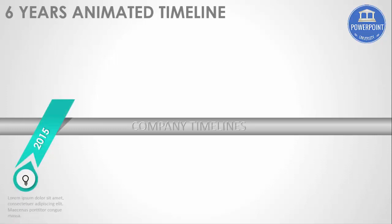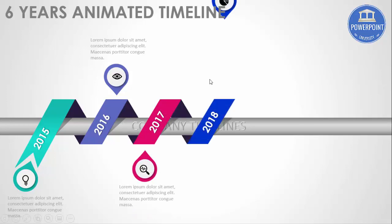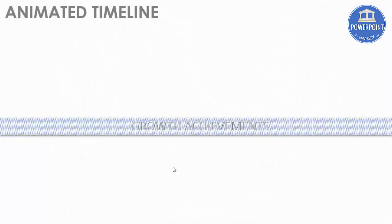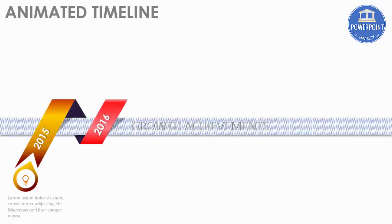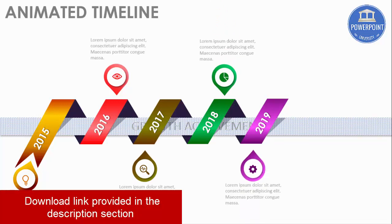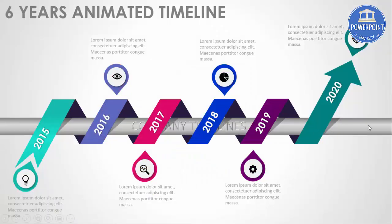When I click, it will show the first year, 2015, then 2016 with detailed text along with an icon. It continues for 2017, 2018, 2019, and the current year 2020. There is another slide with the same effect but different colors, also showing 2015 through 2020. It is a very important slide to show the progress or growth of your company in a timeline manner. So let's see how to do this in PowerPoint.